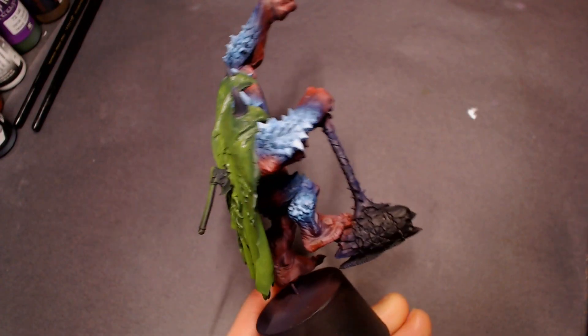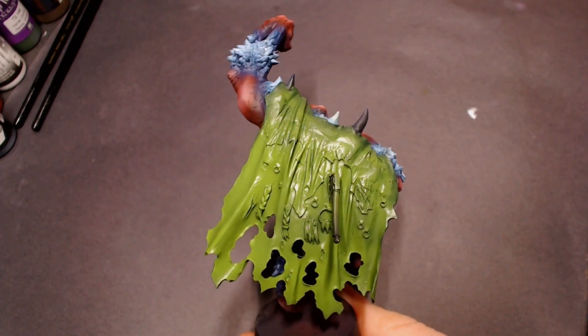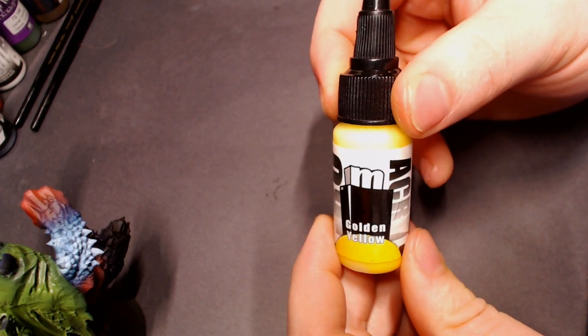All right, now I'm going to pull out some golden yellow from our Pro Acryl line. This is a really bright yellow. You can use sun yellow or maybe moon yellow from Vallejo if you have those paints, or Flash Gitz yellow if you have that from Citadel. It's basically the same color.